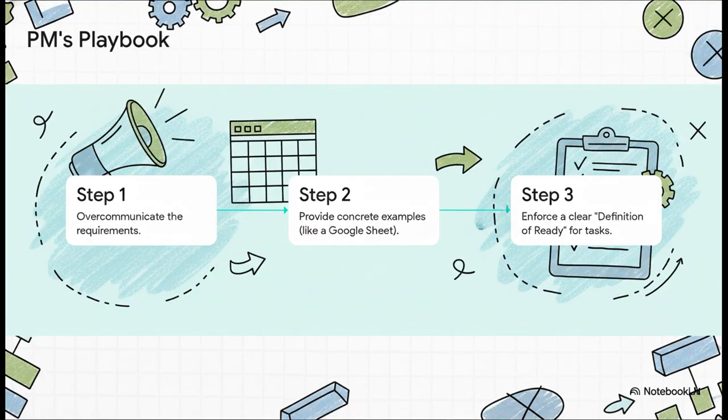So for all you product managers out there, here's how you become the hero of this story. First, over-communicate. I'm serious, there's no such thing as too much context. Second, give people concrete examples. The source material had this brilliant story where a super complex cost calculation was made crystal clear with a simple Google sheet. And third, set up a definition of ready, a simple checklist that a task has to pass before an engineer even lays eyes on it.